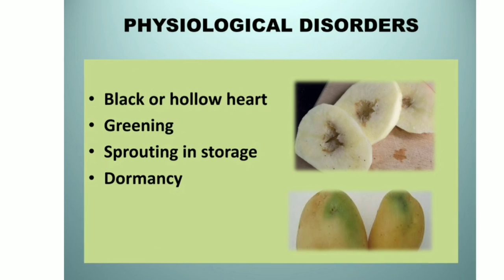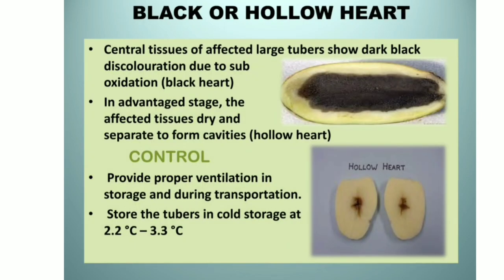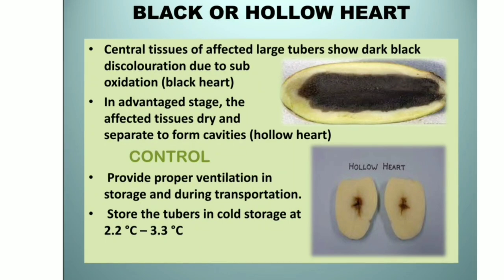Physiological disorders: some of the physiological disorders in potato are black heart, hollow heart, greening, sprouting in storage and dormancy. Black or hollow heart: central tissues of affected large tubers show dark black discoloration due to sub-oxidation, known as black heart. In advanced stage the affected tissues dry and separate to form cavities, known as hollow heart.